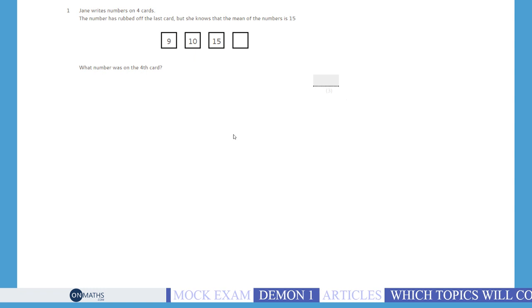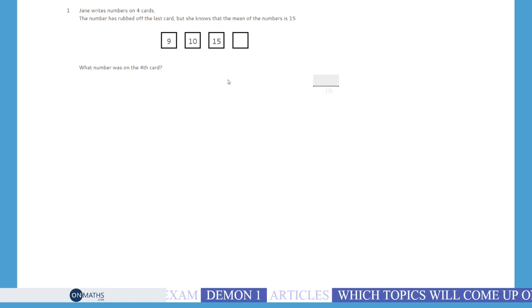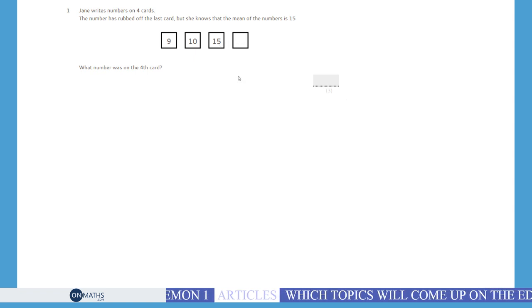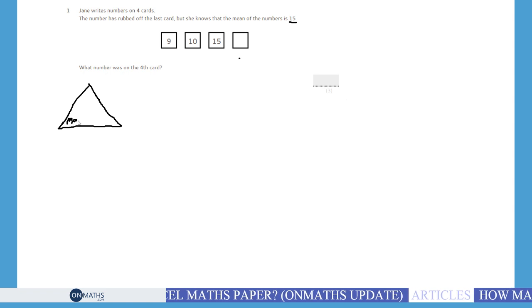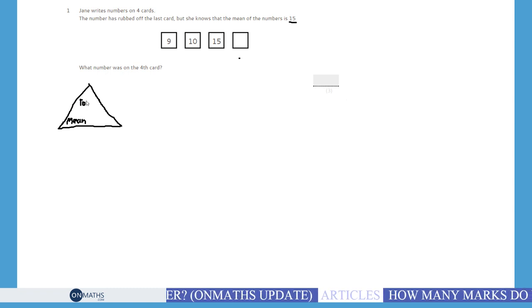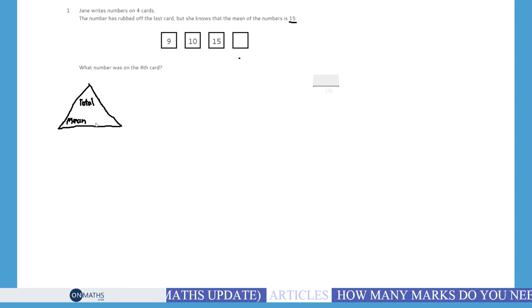Okay, let's go through this one. We're given three numbers on cards and we're missing a fourth number, but we're told that the mean of the four numbers is 15. So we need to find out the missing one. If you know that the mean is 15 and you know there's four numbers, then what some people like to do is think of the mean in a triangle similar to speed distance time. On the bottom left of the triangle is your mean, on your top of the triangle is your total, and on the bottom right is the amount.